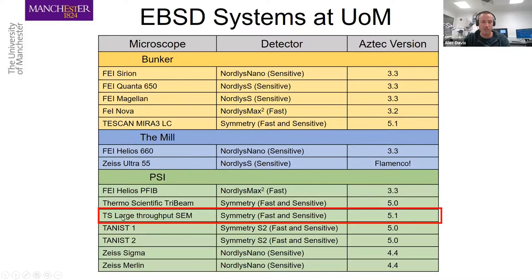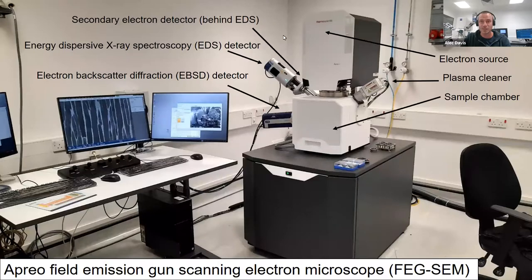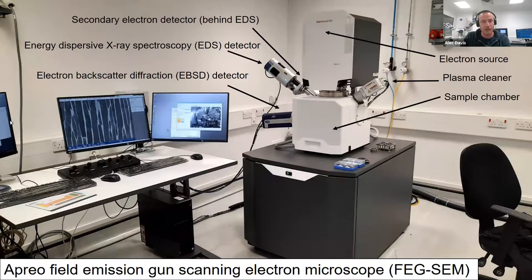Today we'll be using the Thermo Scientific Aprio SEM, which is specifically designed for high throughput EBSD. We've got our Symmetry detector bolted to the side, and two PCs — one for the microscope and one for the Aztec acquisition software. When we move on to the demonstration, I'll be switching the view between these two PCs on the live stream so everyone can see what we're doing.